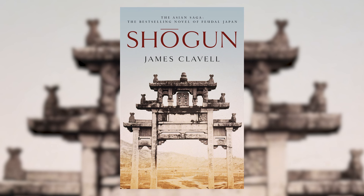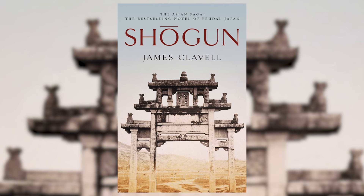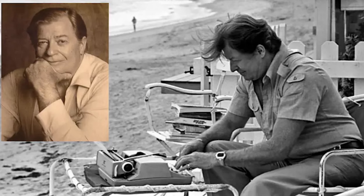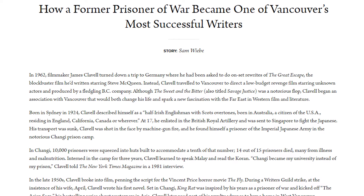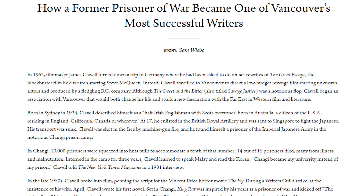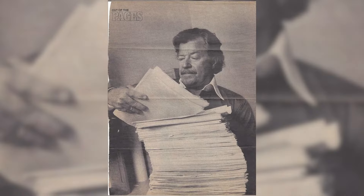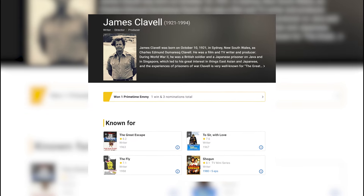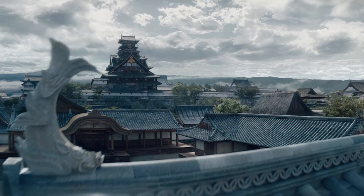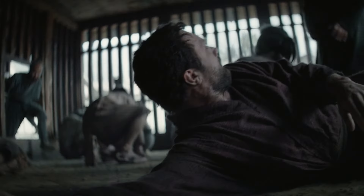James Clavell's transformation of the remarkable true story of William Adams into the captivating novel Shogun is a reflection of his skill as a storyteller and his deep interest in Asian cultures. This fascination likely stemmed from Clavell's own life experiences, particularly his time as a prisoner of war in Changi Prison during World War II, which he described as his university rather than his prison. It was here that Clavell learned the art of surviving, an experience that profoundly impacted him and influenced his later works. Clavell's career began in film, where he wrote screenplays before turning to novels. His deep fascination with Asia, coupled with his first-hand experiences of the harsh realities of war and survival, provided a rich backdrop for his storytelling.